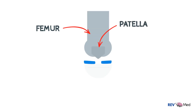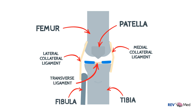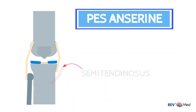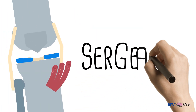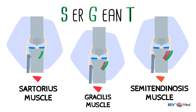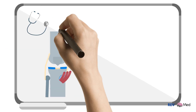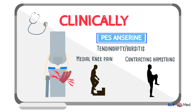We'll draw the femur, patella, tibia, and fibula again to illustrate the medial and lateral collateral ligaments and the transverse ligament. An important structure at the anterior medial part of the tibia is the pes anserine — three tendons of muscles: semitendinosus, gracilis, and sartorius. Behind these tendons is the pes anserine bursa. A great mnemonic is SGT: S for sartorius, G for gracilis, T for semitendinosus — or remember there's a graceful lady between two sergeants. Clinically, pes anserine tendinopathy or bursitis results in irritation of these tendons, and medial knee pain is felt when climbing stairs or contracting the hamstring against resistance.